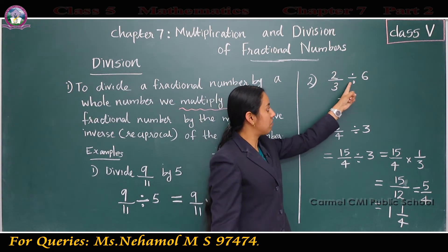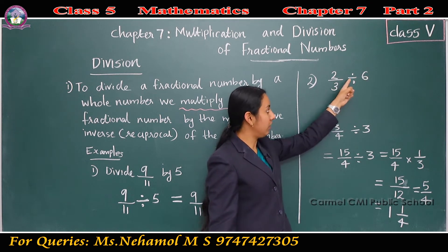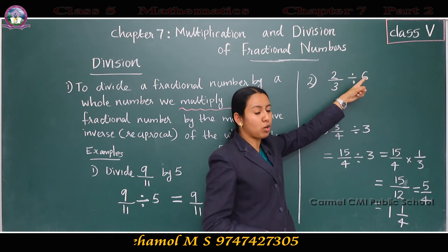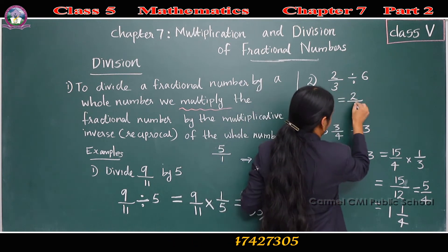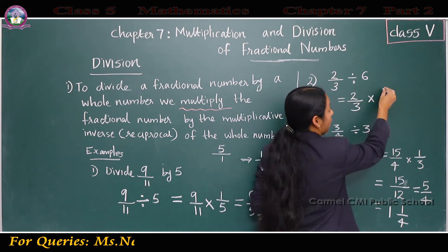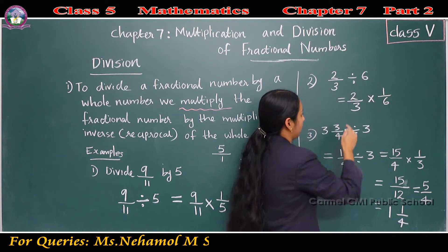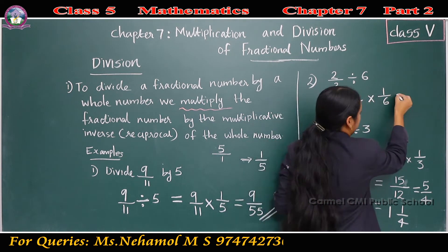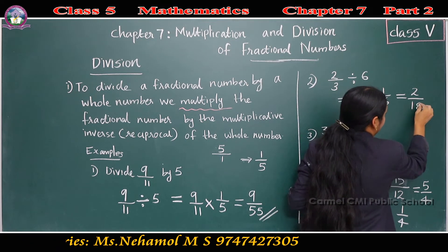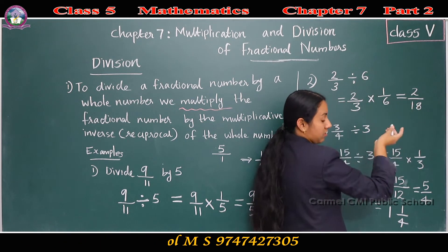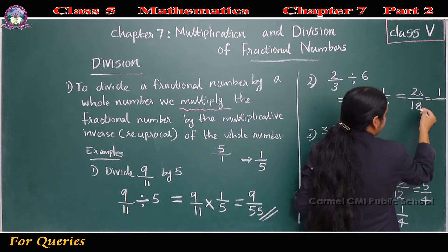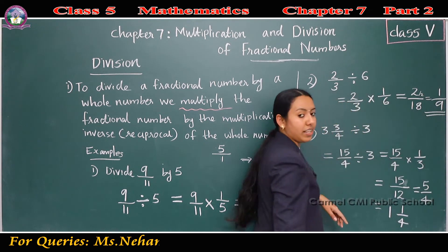Second question: 2/3 divided by 6. To divide, take the multiplicative inverse or reciprocal of the whole number. So 2/3 into reciprocal of 6. The reciprocal of 6 is 1/6. So 2/3 into 1/6 equals 2 into 1, divided by 3 into 6, which is 2/18. We can convert to lowest terms: 2 and 18 are both divisible by 2, giving 1/9. The answer is 1/9.